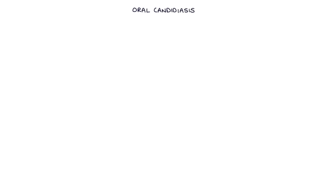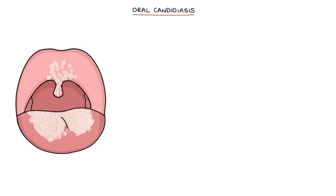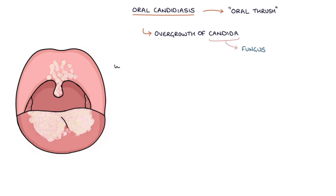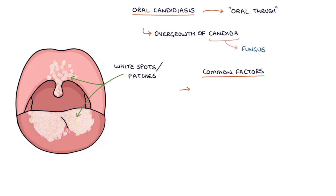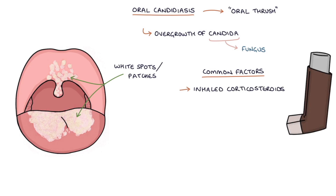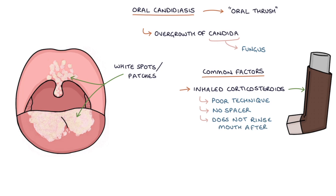Let's talk about oral candidiasis, also called oral thrush. It refers to an overgrowth of candida, a type of fungus inside the mouth. This results in white spots or white patches that coat the surface of the tongue and the palate. Several common factors can predispose someone to developing oral candidiasis, including inhaled corticosteroids — particularly when the person has poor technique, does not use a spacer and is not rinsing their mouth with water afterwards — and antibiotics, which disrupt the normal bacterial flora of the mouth, giving candida a chance to thrive.